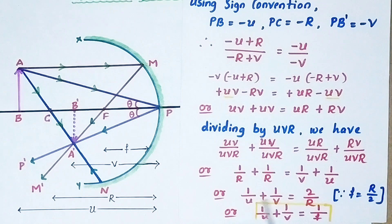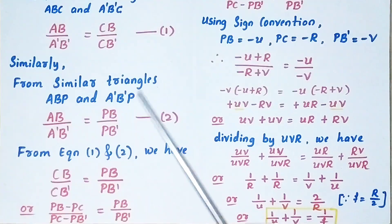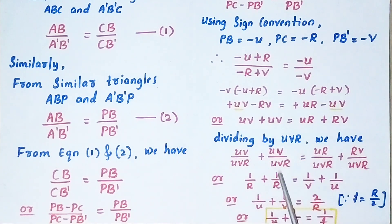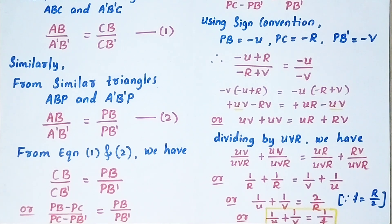This is the mirror equation, which gives the relation between focal length, object distance, and image distance. This derivation is very important and it carries 5 marks. Remember, first you have to draw a ray diagram, then follow these steps. The final equation is 1/u + 1/v = 1/f, and this is what we call the mirror equation.